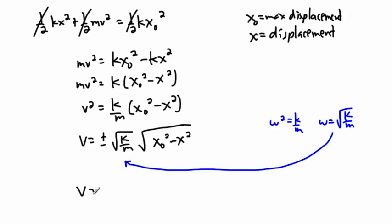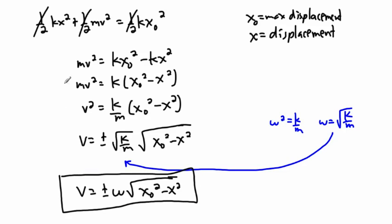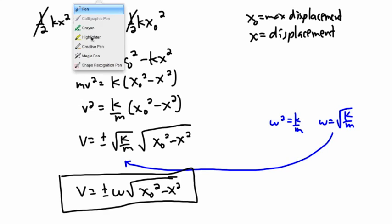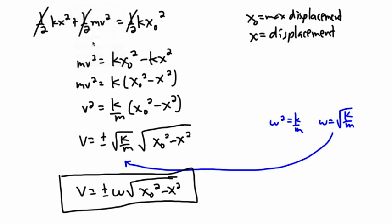Well, if that's the case, this square root of k over m can be replaced with omega. So then finally, I have v equals plus or minus omega times the square root of x zero squared minus x squared. And this is your other equation for velocity. This is it. The whole goal was to derive an extra equation for velocity. Well, here it is. This is actually a very useful one.